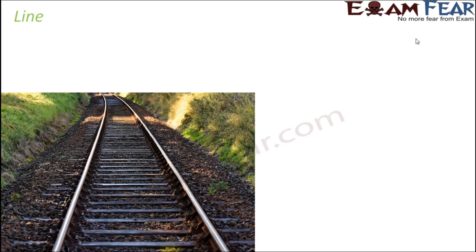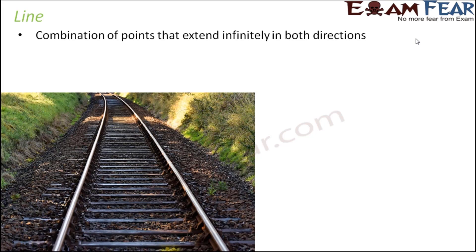The next one is line. A line is a combination of points that extend indefinitely in both directions. It will continue infinitely in both directions — this is important about a line. It is nothing but a lot of points put together one after another such that it extends in both directions infinitely. When you think of a line, you can think of the railway lines, the railway track — it kind of extends infinitely. That's an example of a line.